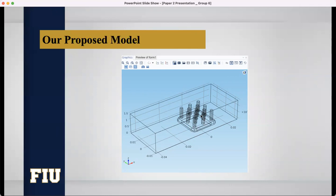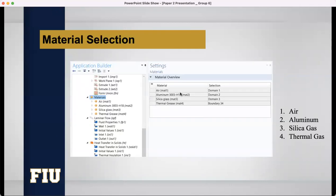And this one actually domain 2. For this domain, we have selected aluminum as the material. And then, for domain 1, we have selected air. For domain 3, we have selected silica gas. And for boundary 34, we have selected thermal gases.